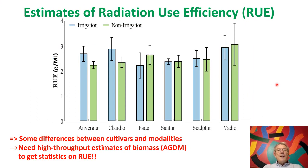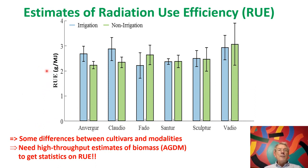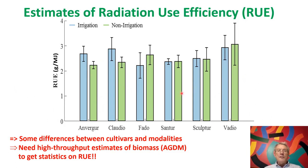With this technique we can measure the radiation use efficiency. Some examples show RUE expressed in grams of biomass per megajoule of intercepted radiation for six cultivars, demonstrating differences between cultivars as well as differences between modalities.